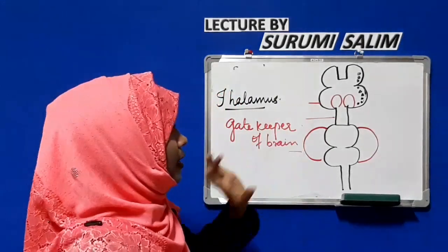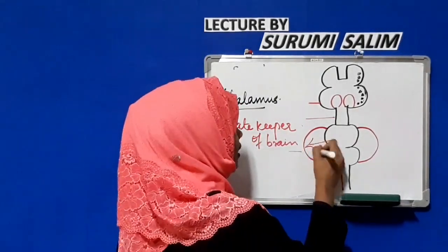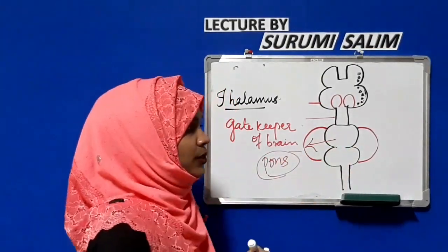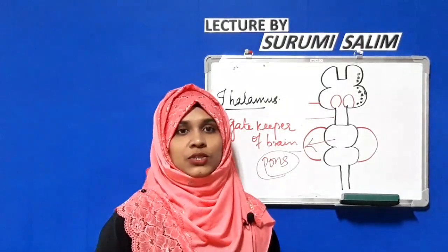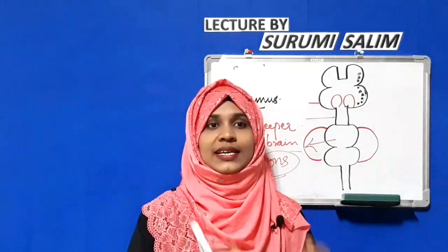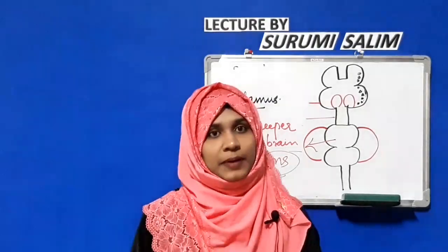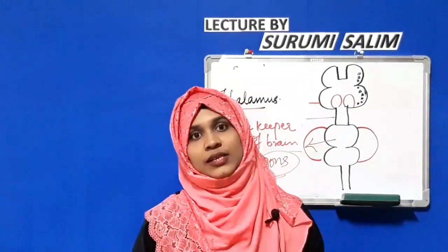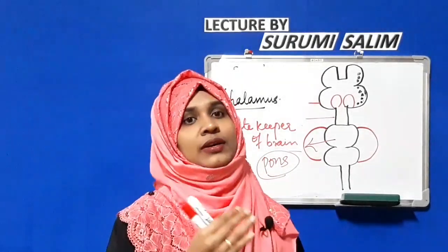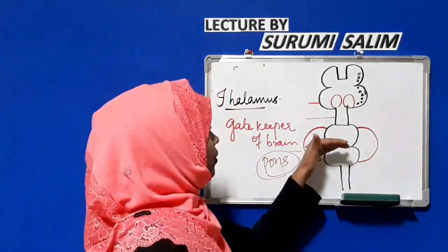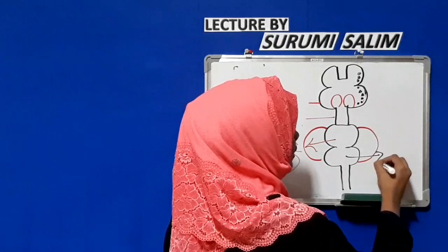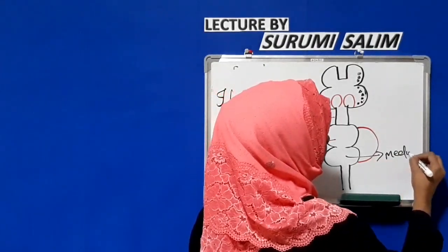Now for the hindbrain — the first portion is the pons, which is the bulging area visible in the diagram. The pons helps in respiration; it contains the pneumotaxic respiratory center and helps in the regulation of the depth and rate of respiration. Below the pons is the medulla oblongata.